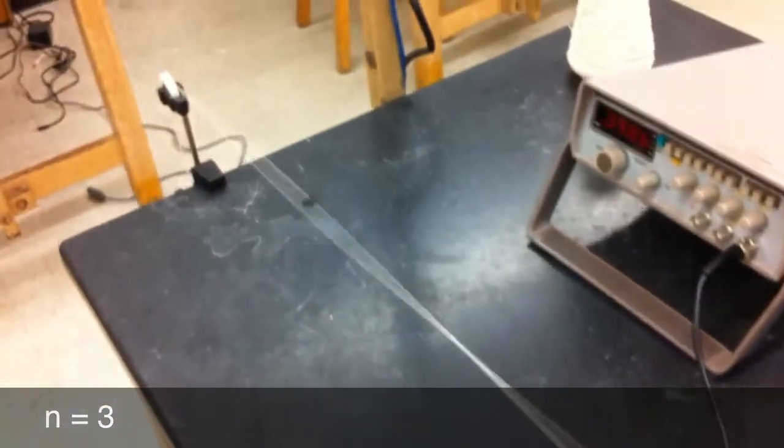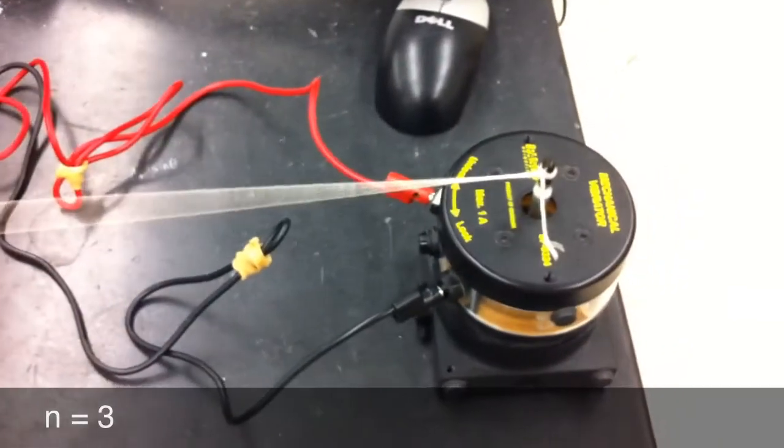This is the N equals three standing wave, so called because it has three anti-nodes, three areas with maximum vibrations. N equals six and seven can be quite difficult to see.